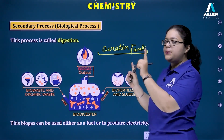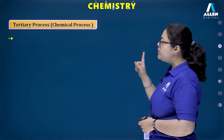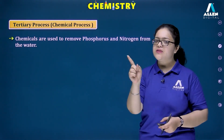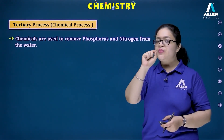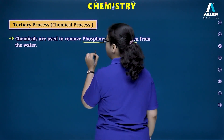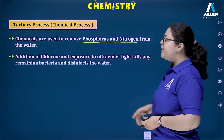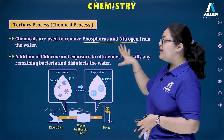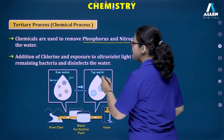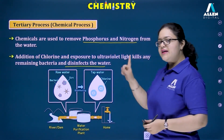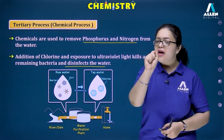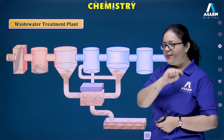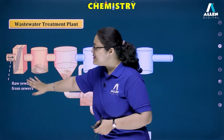The third step is the tertiary process, also known as the chemical process, because mainly chemicals are used here to remove the remaining impurities — basically phosphorus and nitrogen, which are plant nutrients. We add chlorine and also apply ultraviolet radiation, which kills the remaining bacteria and germs and disinfects the water. After the tertiary process is completed, we understand all three steps with the help of a diagram.